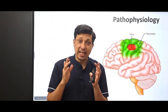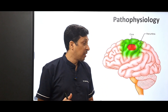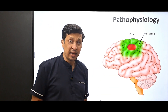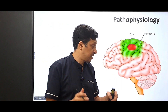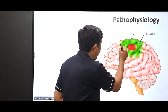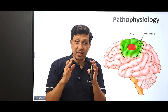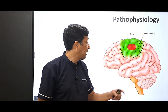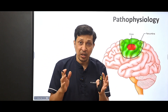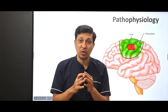Let's understand the pathophysiology. When an artery is blocked, in the center of the ischemic area there is a core where all the neurons are already damaged. Surrounding the core is an area called the penumbra, where neurons are still salvageable. If you recognize stroke early and perform thrombolysis early, the neurons in the penumbra can be saved.